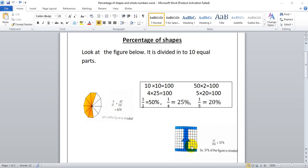Look at the second figure. 100 squares are there. Out of them, 37 squares are shaded. So 37 out of 100 is 37 percentage. So 37 percentage of the figure is shaded.